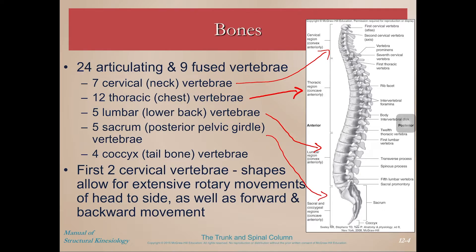The first two cervical vertebrae are the atlas and the axis, and these have different shapes. Their shapes allow for extensive rotary movement as well as forward and backward movement — flexion and extension of the head.